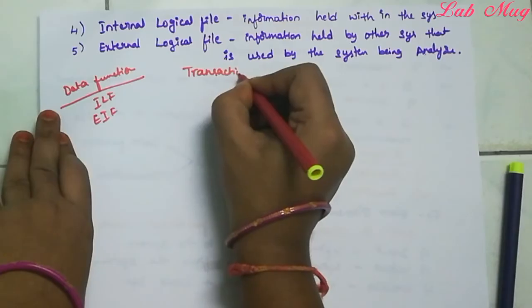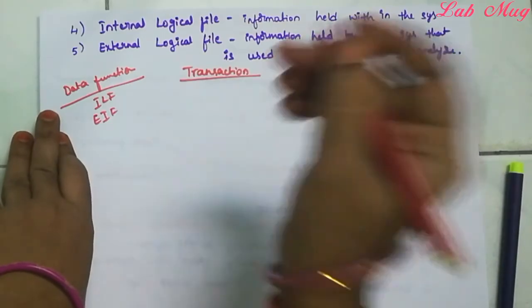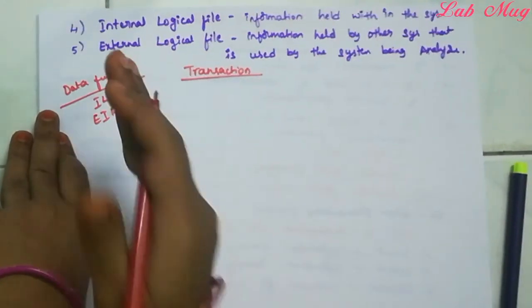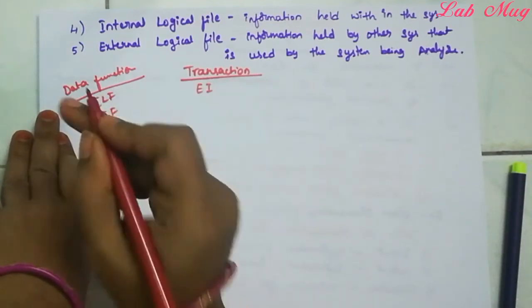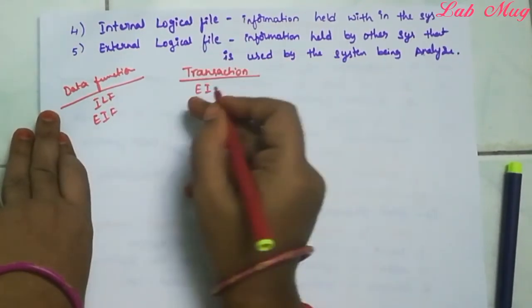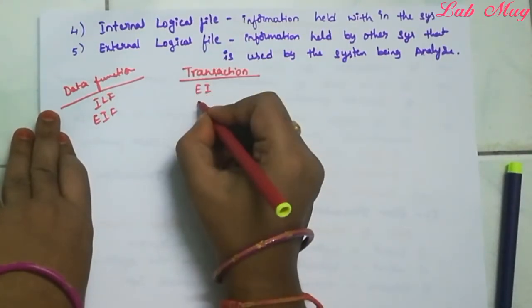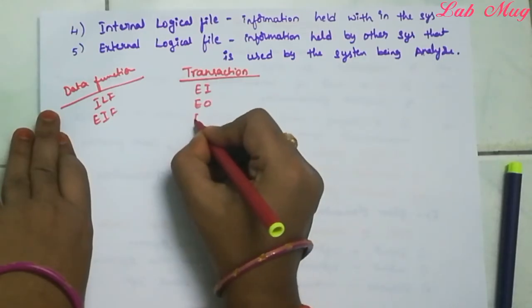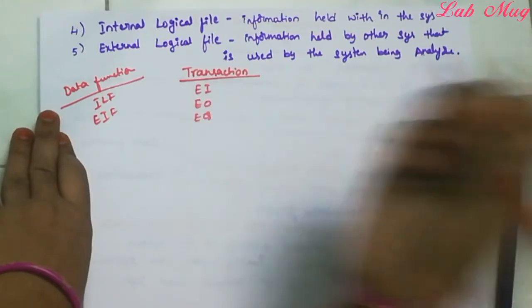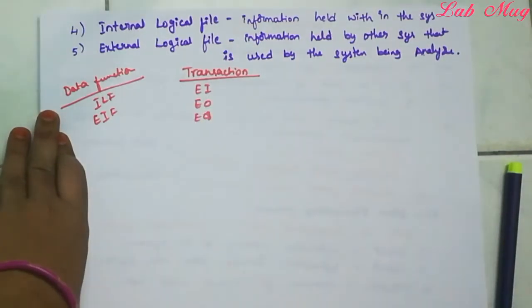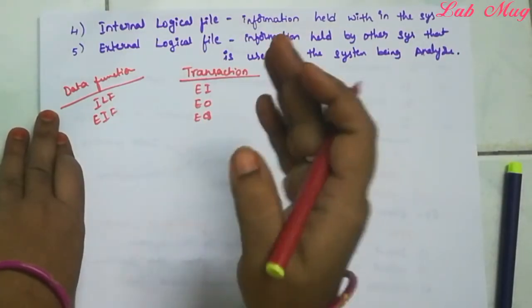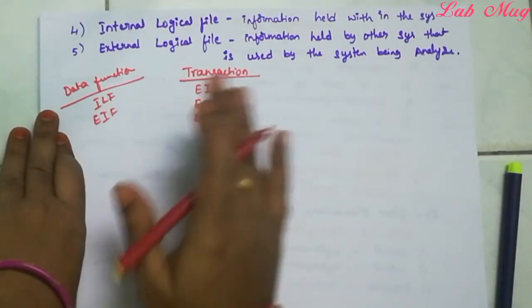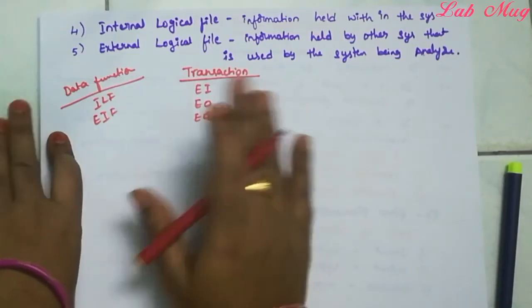So like this, three units go into Transaction Functions and two units go into Data Functions - that is how we categorize them. Transaction functions have External Input, External Output, and External Inquiries. Data functions have Internal Logical File and External Interface File.